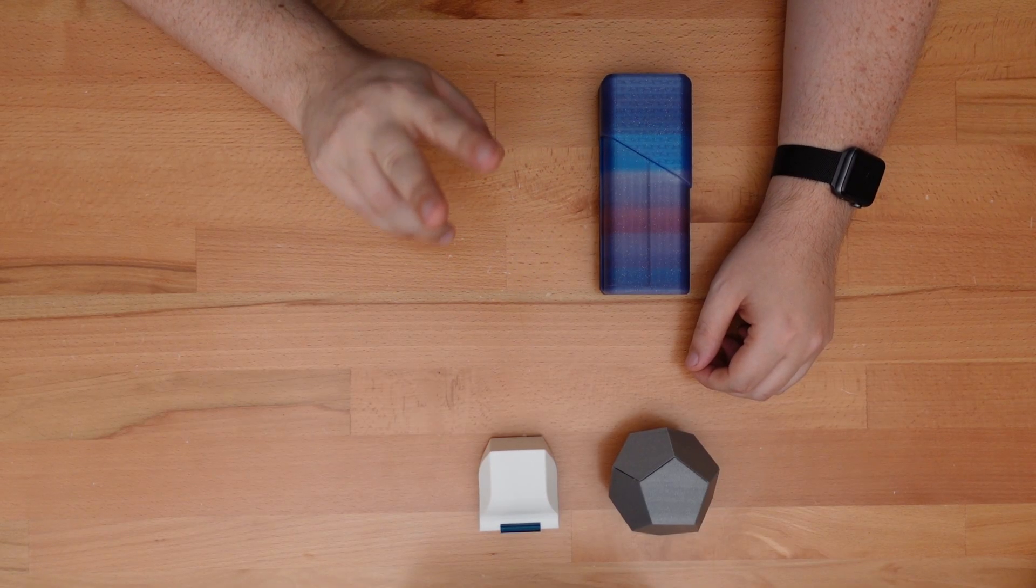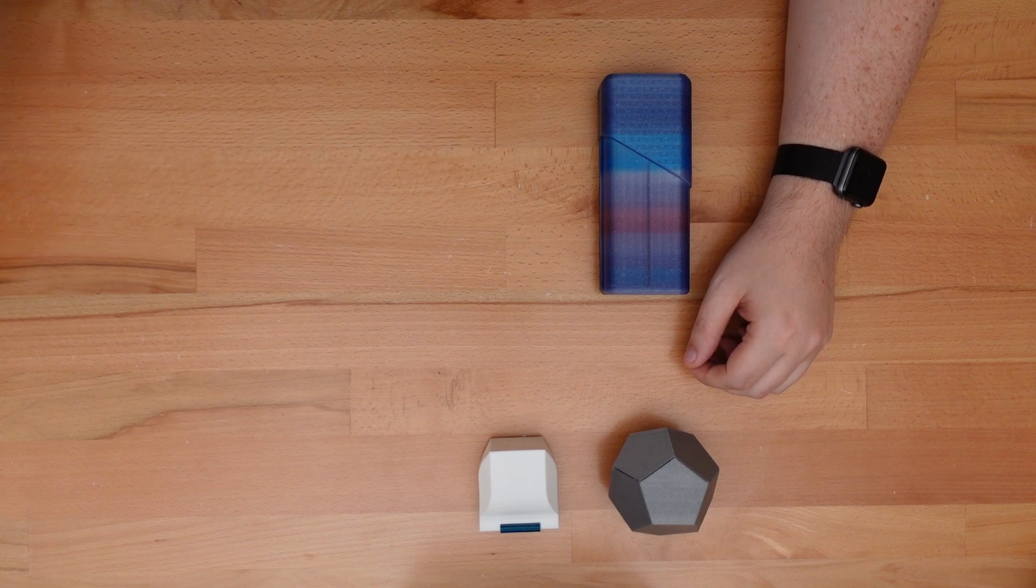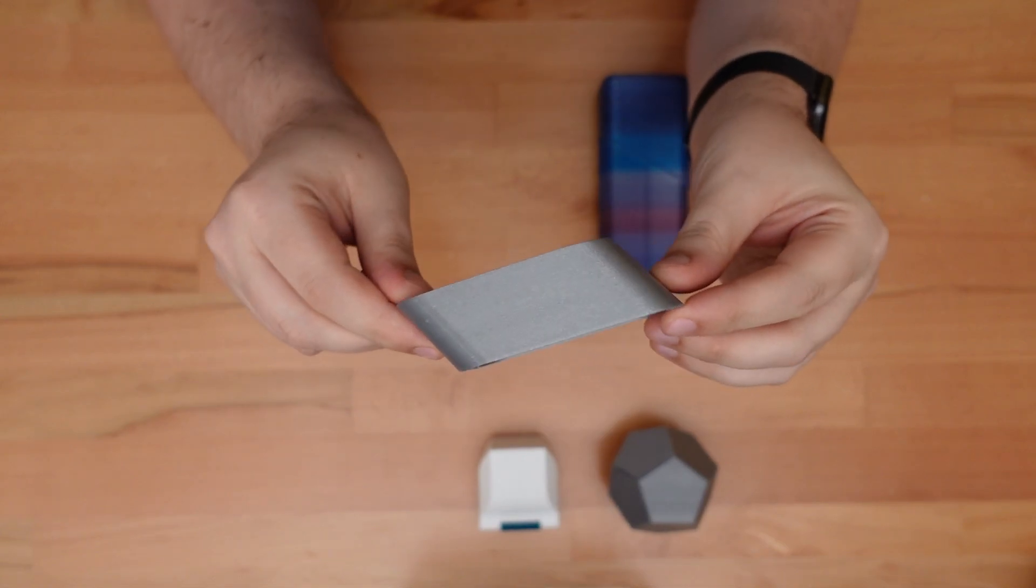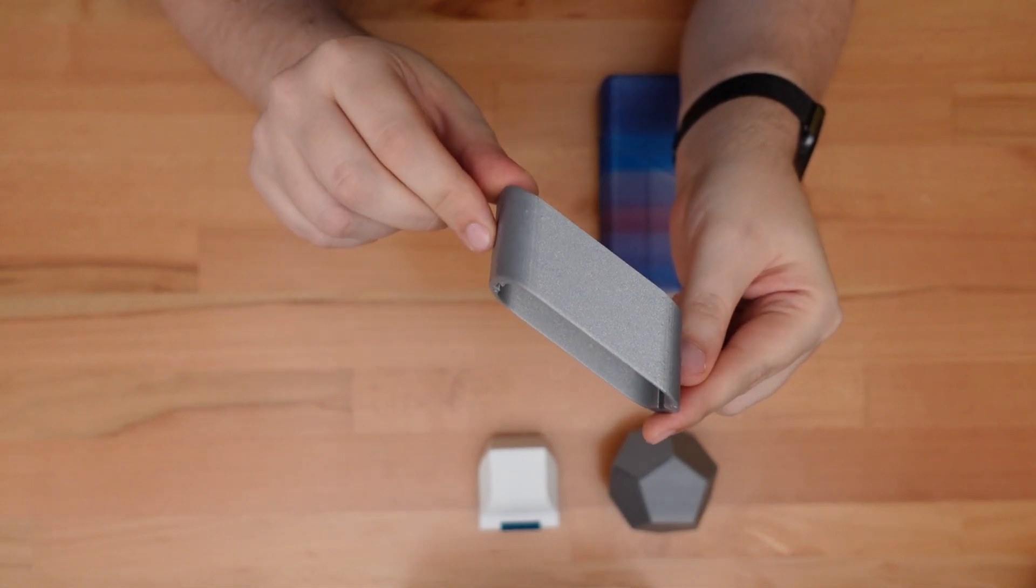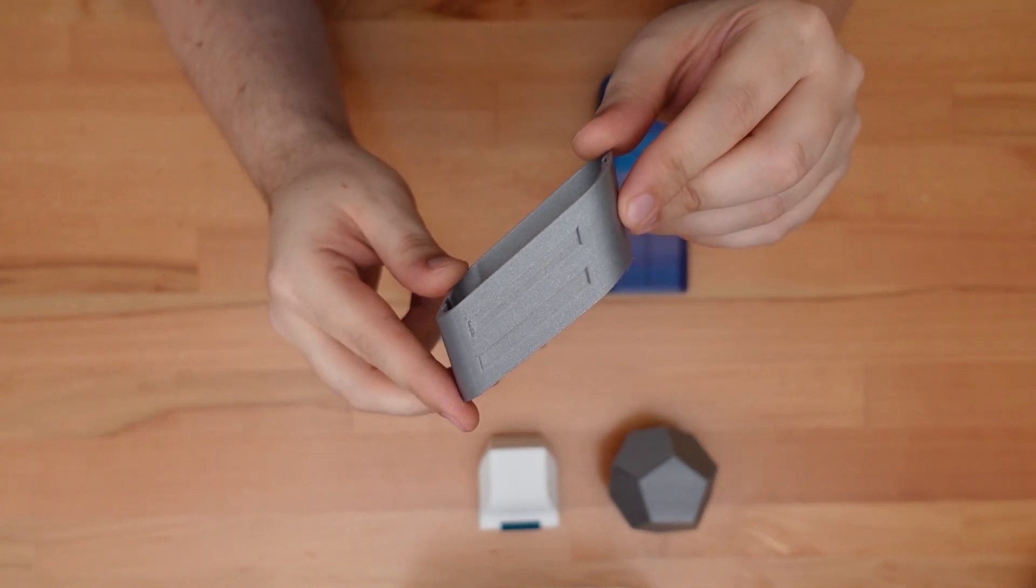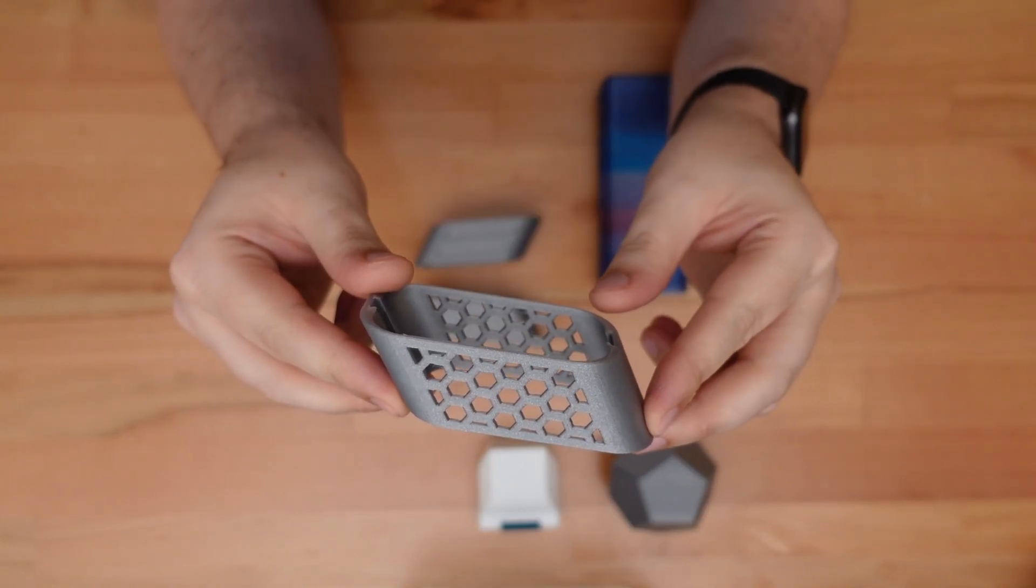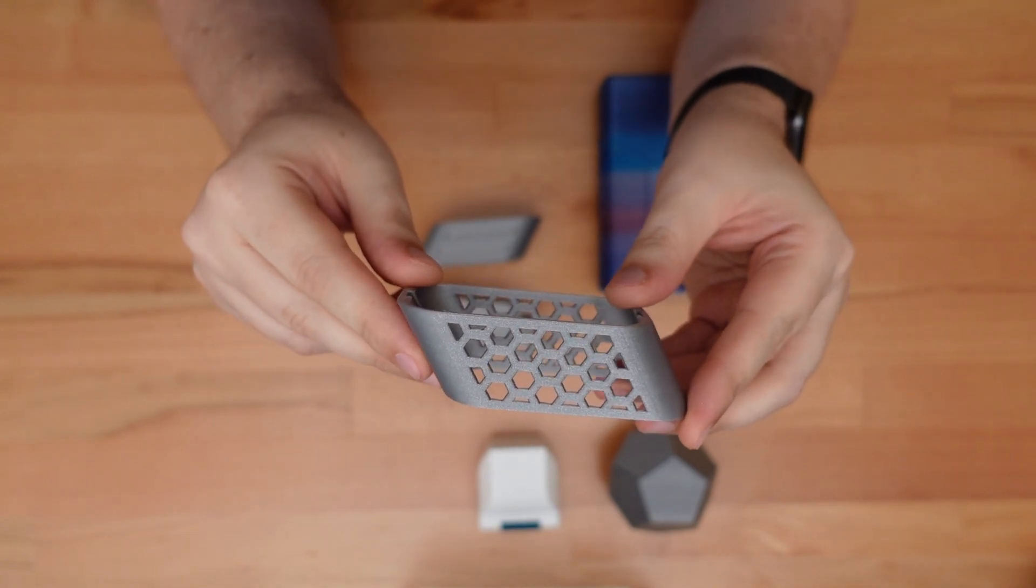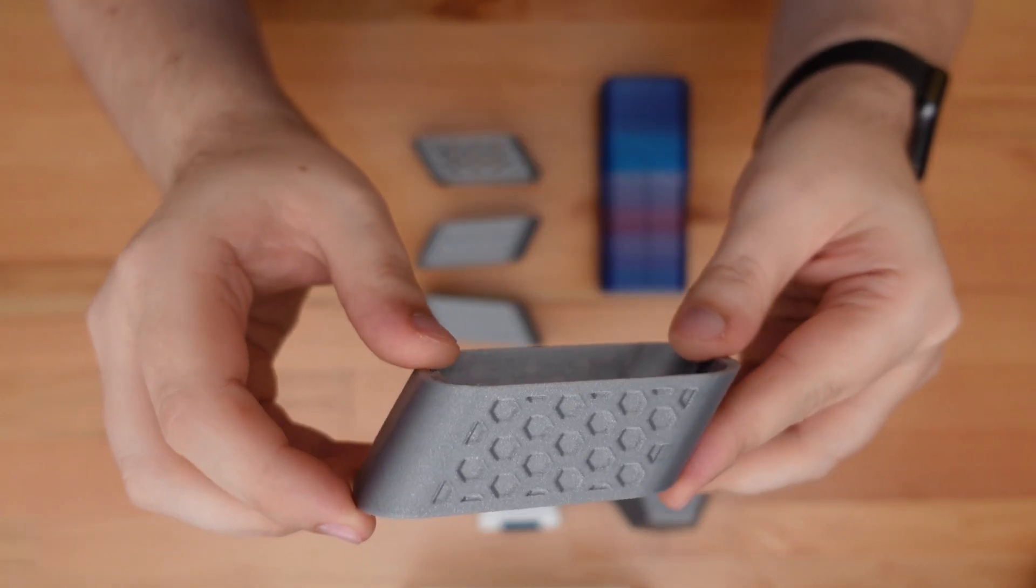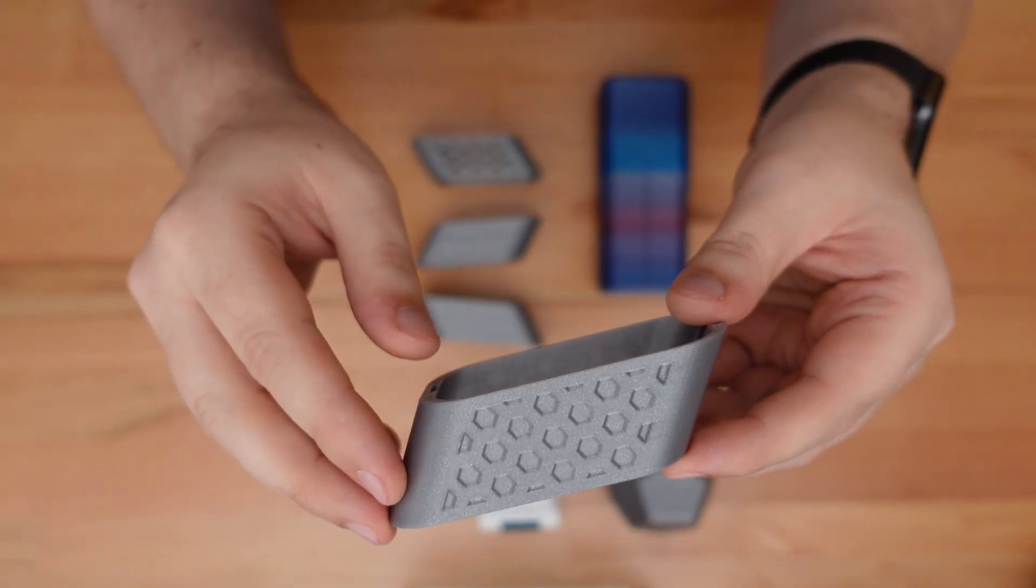This design has four different band styles: plain, which is perfect for adding your own embossed text or logos; stripes, for a bit more grip; hex holes, which lets the case color shine through the band; and finally, hex indents, an easier to print version of the previous band.